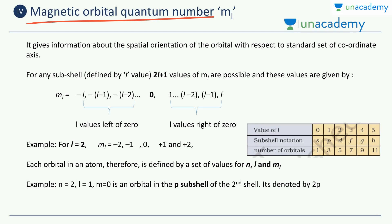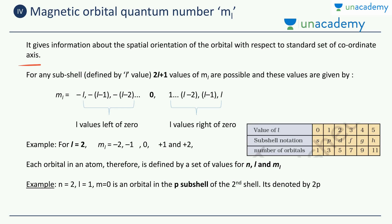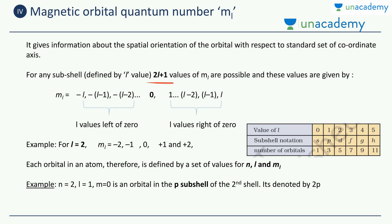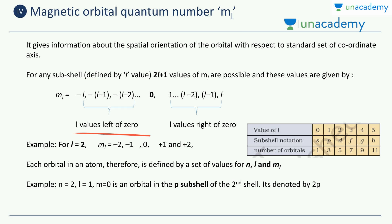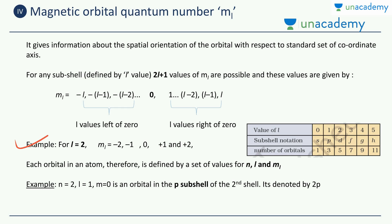Let us move on to the next quantum number — the magnetic orbital quantum number ML. It gives us information about the spatial orientation of the orbital with respect to the standard set of coordinate axes. So once we know the shape of the orbital from L, we can find out its orientation. For any sub-shell defined by L, there are 2L+1 possible values of ML. For example, for L equals 2, you write 0 in the center, then 2 values to the left and 2 values to the right, giving you the values −2, −1, 0, +1, +2. That is why 2L+1 are the possible values of ML for each L.